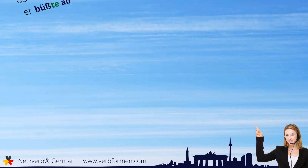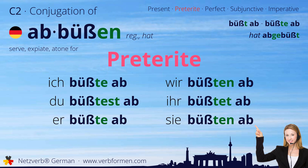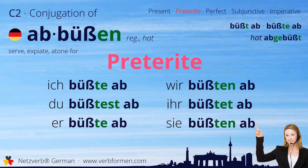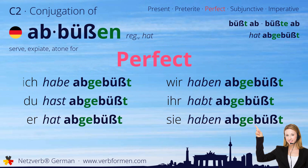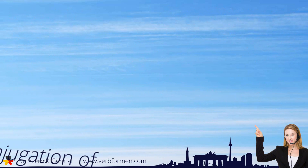Next up is the preterite. Let's continue with the present perfect. Next up is the subjunctive one.